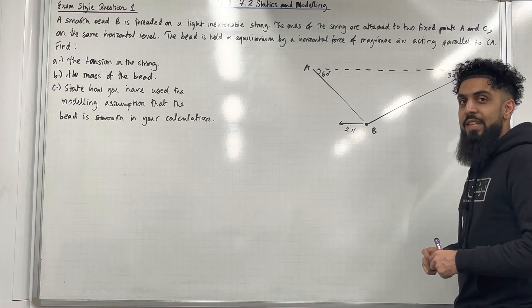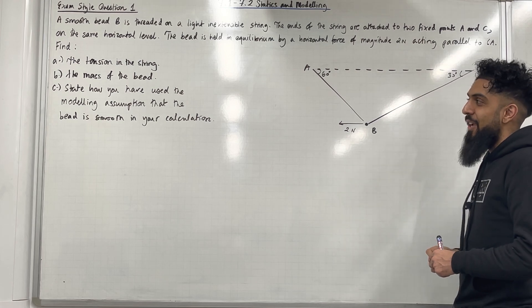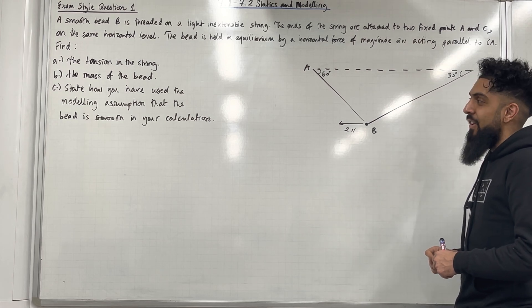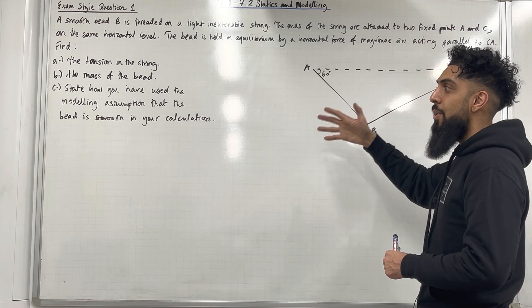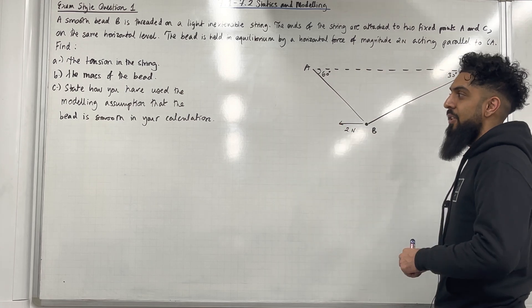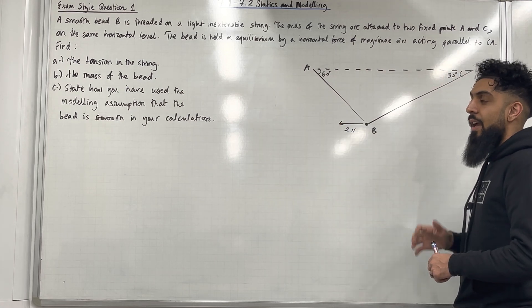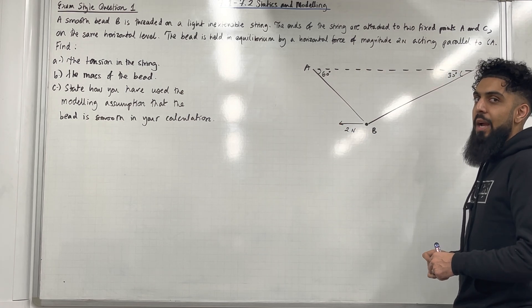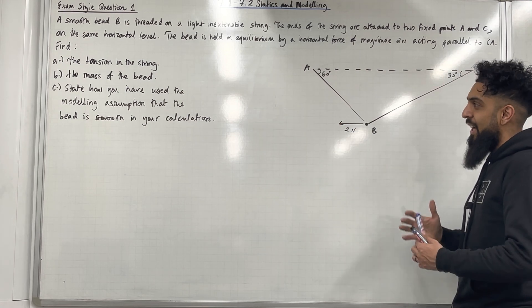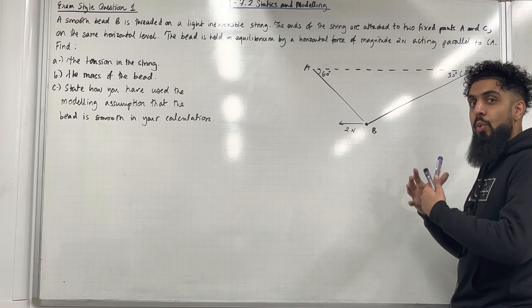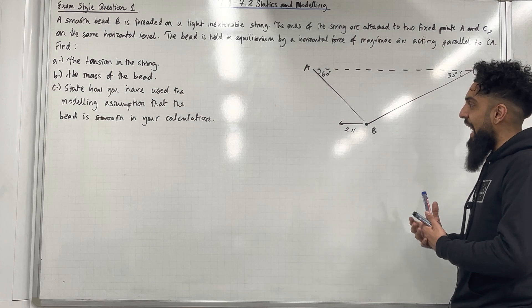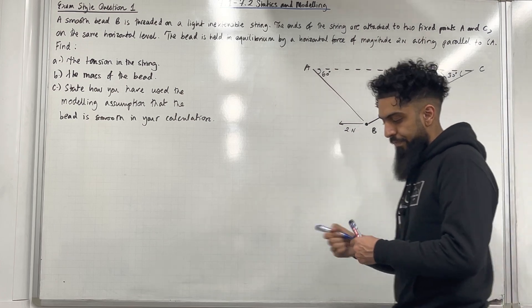Find part A, the tension in the string; part B, the mass of the bead; and part C, state how you have used the modelling assumption that the bead is smooth in your calculation. Before I do A, B and C, I am going to label all the forces acting on this particular bead.